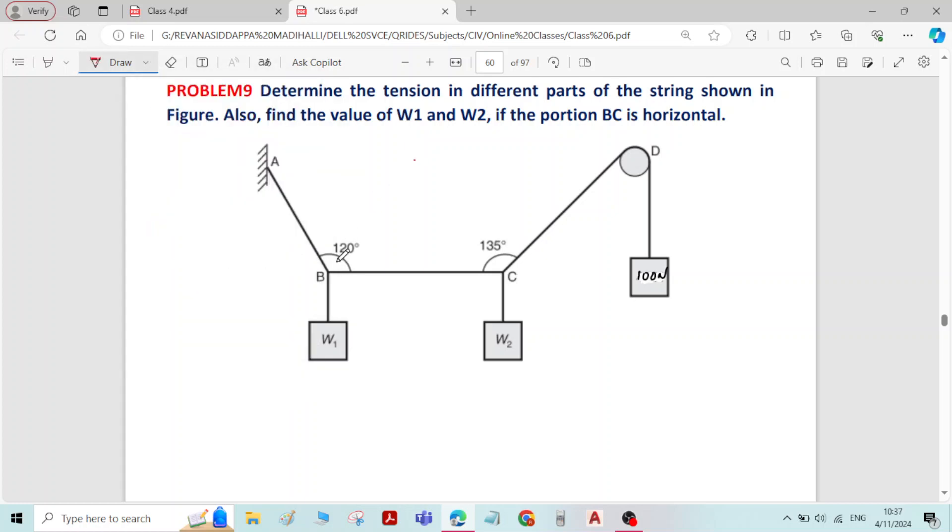If you select joint B, force in member BA is unknown, force in member BC is unknown, then W1 is unknown. So at joint B there are three unknown forces. Therefore, joint B cannot be selected.